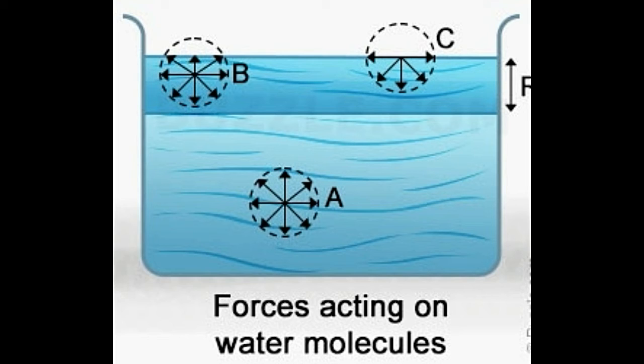A part of the sphere of influence of molecule B is above the surface of the water. Hence, adhesive forces from air molecules act on molecule B. Due to this, the cohesive forces from molecules below and around B pull it down. Thus, the net unbalanced downward resultant cohesive forces pull molecule B down in the water.